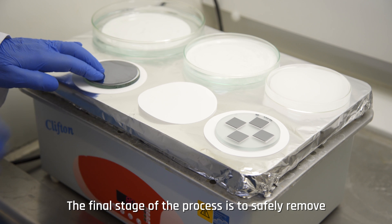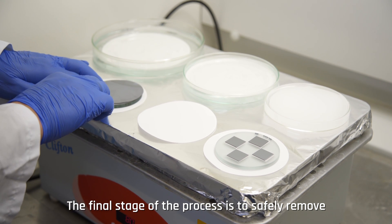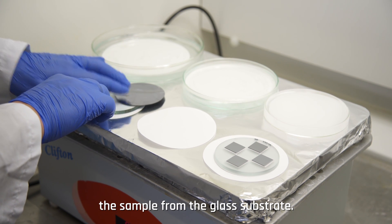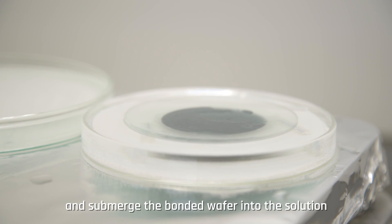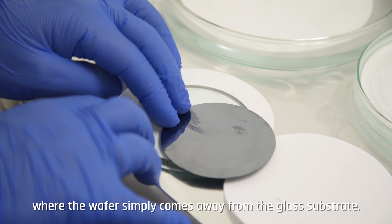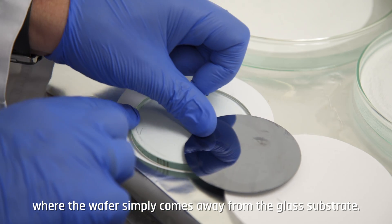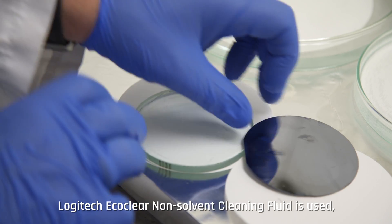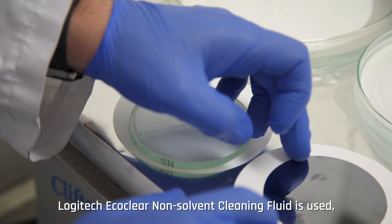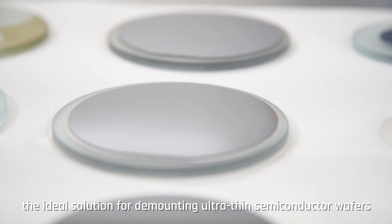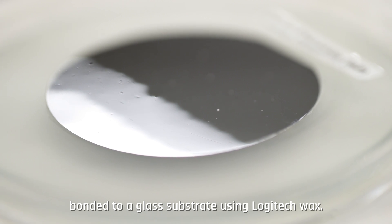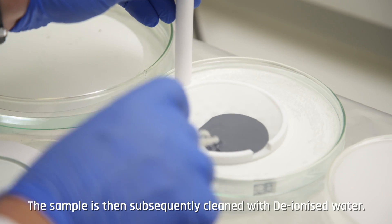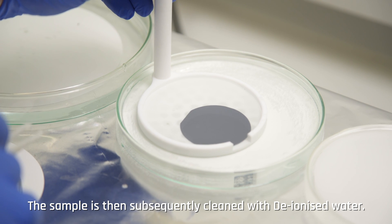The final stage of the process is to safely remove the sample from the glass substrate. We set up solvent baths on a hot plate and submerge the bonded wafer into the solution where the wafer simply comes away from the glass substrate. Logitech EcoClear non-solvent cleaning fluid is used, the ideal solution for demounting ultra-thin semiconductor wafers bonded to a glass substrate using Logitech wax. The sample is then subsequently cleaned with deionized water.